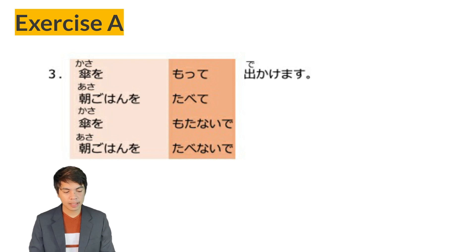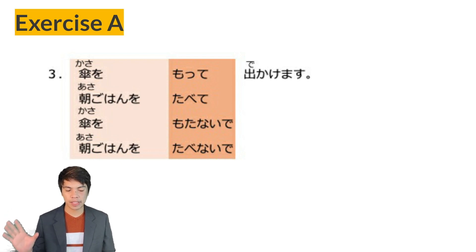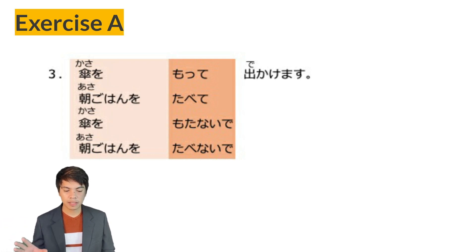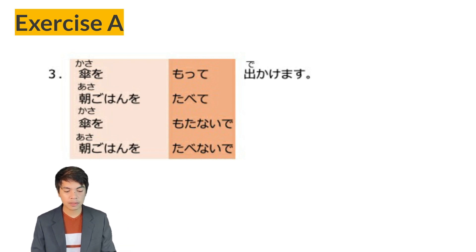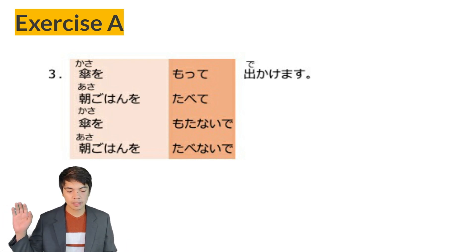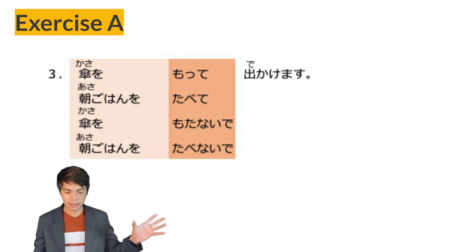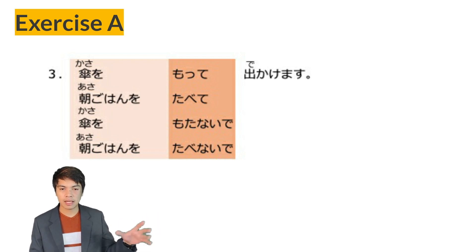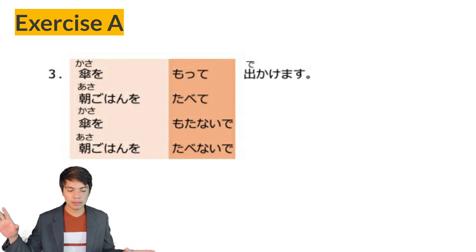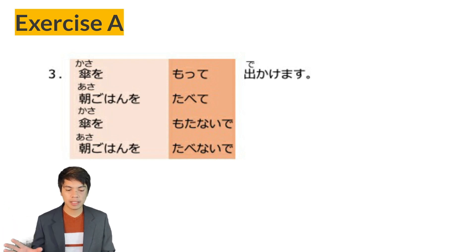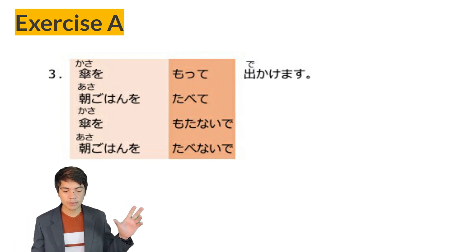Number three. Kasa wo motte dekakemasu — holding an umbrella, I go out. Asagohan wo tabete dekakemasu — eating breakfast, I go out. The opposites: Kasa wo motanai de dekakemasu — without carrying an umbrella, I go out. Asagohan wo tabenai de dekakemasu — without eating breakfast, I go out.